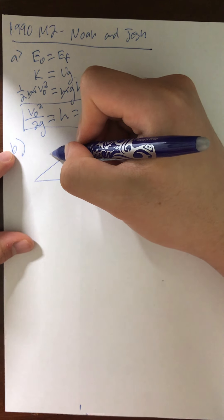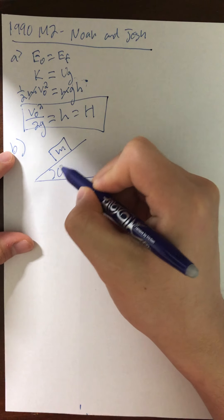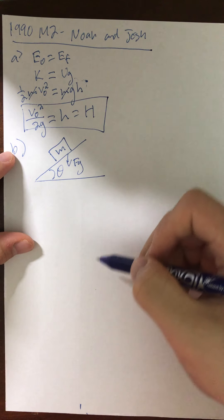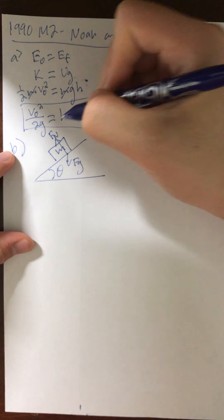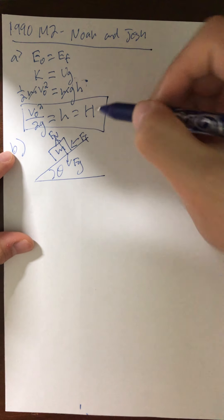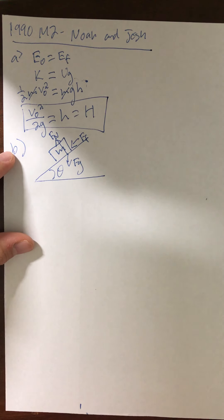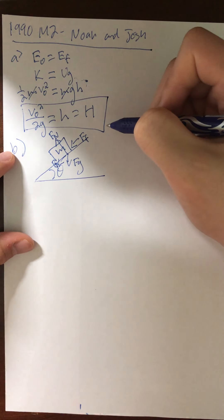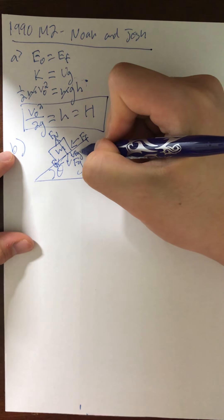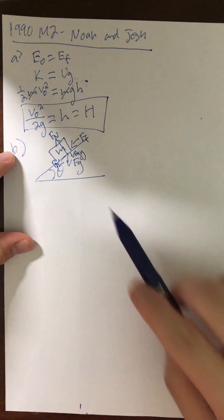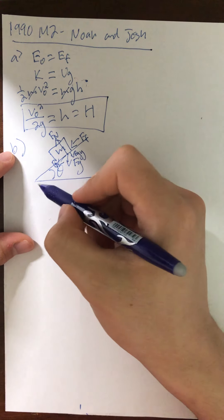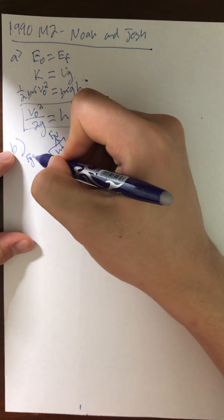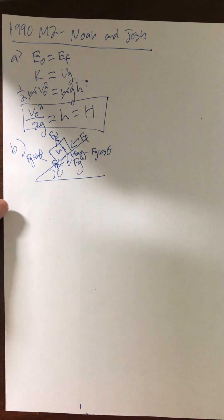So that's the incline that the block is on, here's the block of mass m, and here's the angle theta that the incline is slanted at. We have fg going straight down to the ground, fn perpendicular to the surface it's sliding on, and friction going against the motion of the object. We can break fg up into its components: fgy equals fg cosine theta, and fgx equals fg sine theta.